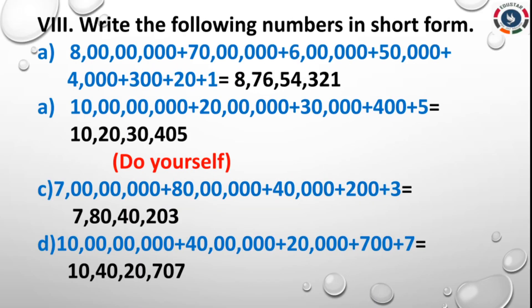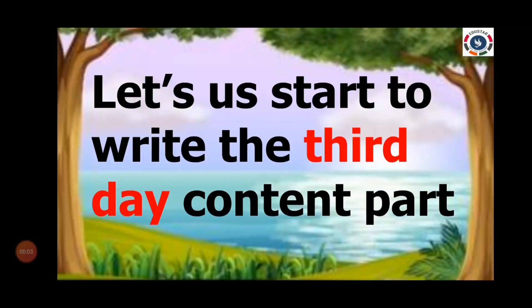Write the following numbers in short form. First 2 sums I give the answer; the next 2 you did yourself. So: 7 crore + 80 lakh + 40,000 + 2,00,000 + 3 = 7,80,42,003. Then D: 10 crore + 40,000 + 20,000 + 700 + 7 = 10,00,60,707.